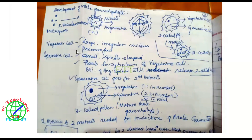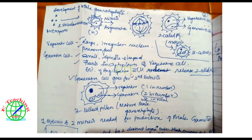Now let's look at the diagram. The vegetative cell is a large cell with a regular nucleus — this is the food preservation cell. The generative cell is smaller; it is spindle-shaped, floating free inside the vegetative cell. Remember, 60% of angiosperms shed pollen at the two-celled stage. That means the second mitosis undergoes during the three-celled stage. So the generative cell again goes for the second mitosis. This gives us the three-celled pollen grain — that is the mature male gametophyte.